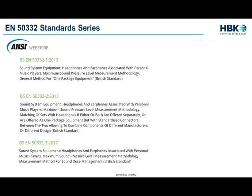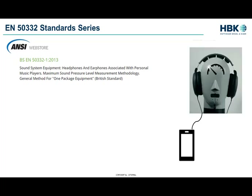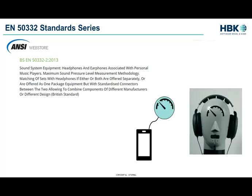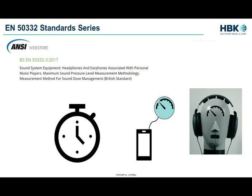Here we can see the set of British standards, currently available for sale on the American ANSI web store. EN 50332-1 is a test method for measuring the maximum SPL output of a packaged music player, where the headphones are considered integral to the device. EN 50332-2 is a method for separately testing the electrical output of a music player and the output sensitivity of earphones. EN 50332-3 is a method for verifying the performance of sound dose management features on digital audio devices to protect users over extended usage durations.